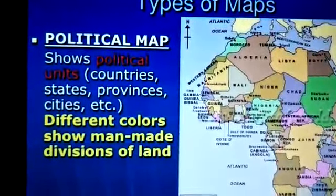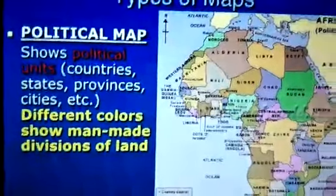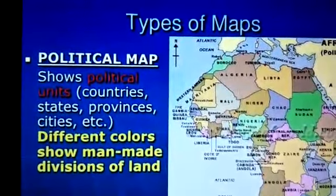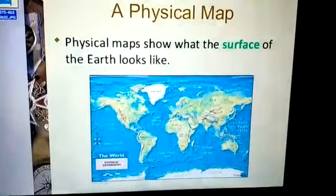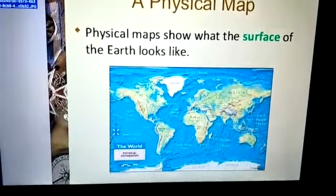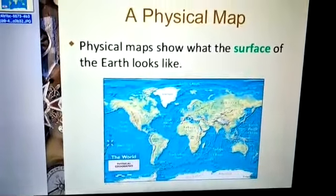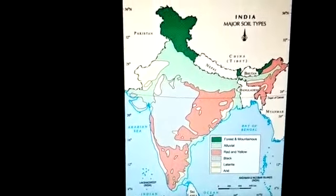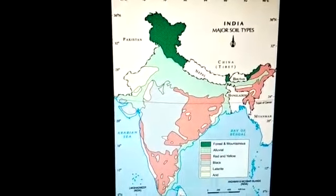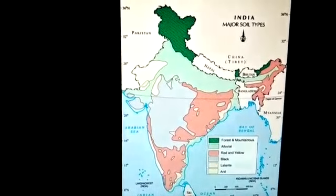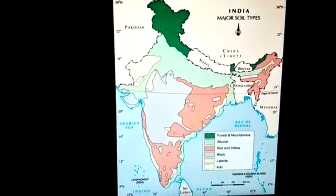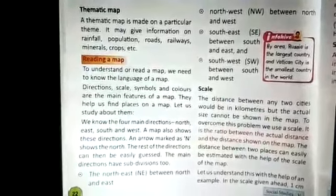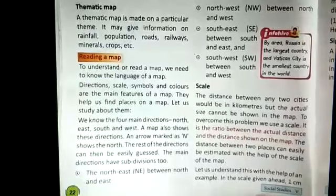A political map shows the divisions or boundaries of countries and states — the political divisions of a country. A physical map shows what the surface of the earth looks like; it explains about the landforms, whether it is a water body or a mountain area. Next is thematic maps. A thematic map is particularly based on a theme — for example, we can see major soil types on such a map, explaining the particular theme of soil types in a country like India. A thematic map is based on a particular theme. The person who makes or draws a map is called a cartographer.